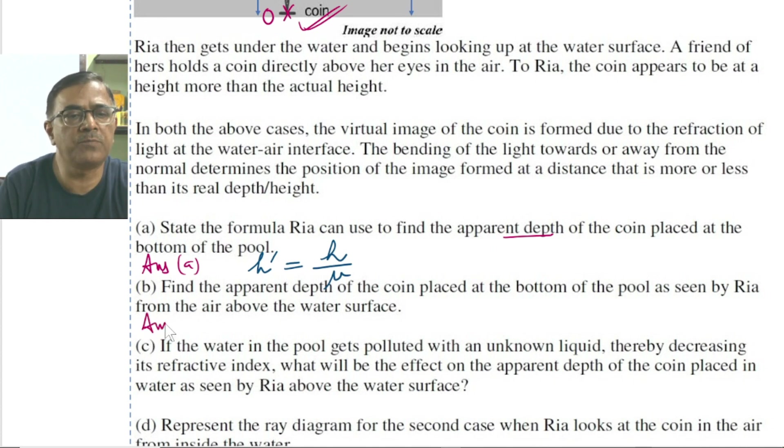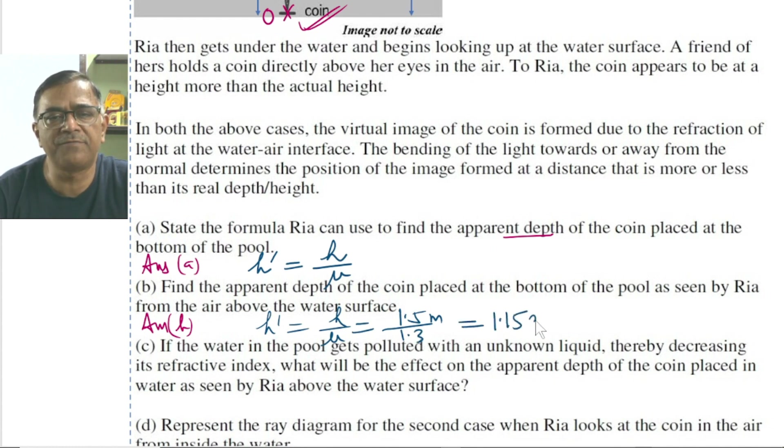In part B of the problem, we are supposed to find the numerical value of the apparent depth as seen by Rhea. The apparent depth h' is equal to h by mu. Now to substitute the values, h is equal to 1.5 meters and mu is 1.3. Solve it and this is equal to 1.15 meters. So this should be the apparent depth of the coin.